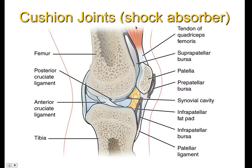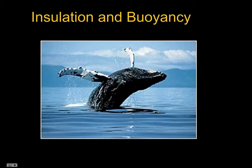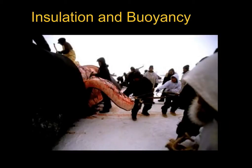Another function I mentioned is this idea of being a shock absorber, cushioning joints. This is your femur and tibia — this is your knee — and sure enough there's some fatty material in there to help with shock absorption. And last but not least, maybe not so much in humans, there's insulation and buoyancy. This whale could be in very cold water — the blubber insulates it and also helps it float. And here's a picture of some Inuits stripping off some blubber there.